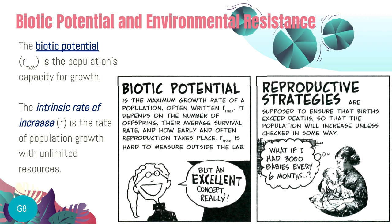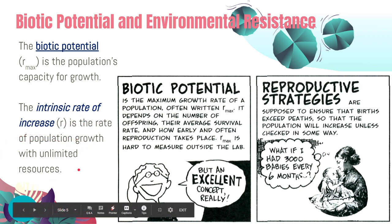Biotic potential and environmental resistance are two major forces that help maintain balance in an ecosystem. We define biotic potential as the population's capacity for growth, usually represented by R-max, wherein R refers to the intrinsic rate of increase — the rate of population growth with unlimited resources.